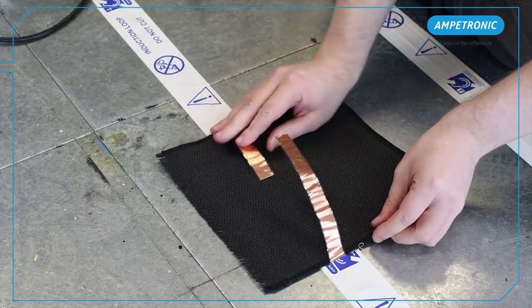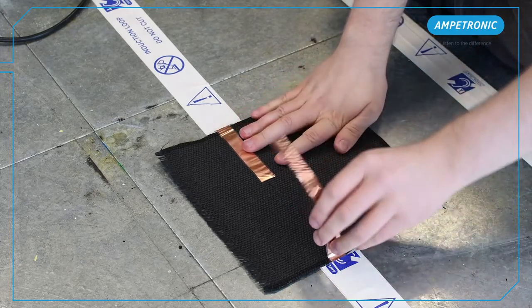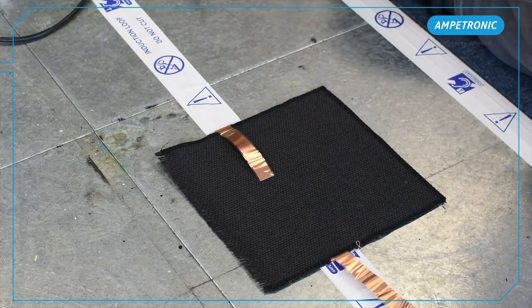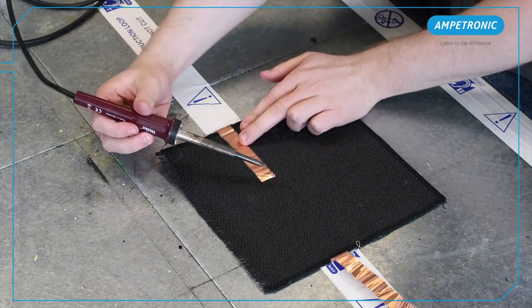We recommend using the largest reels of tape available to minimize joints, but especially in larger rooms there may be times you need to join two pieces of tape together.